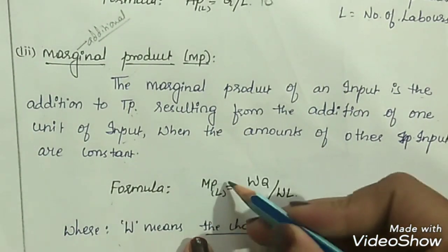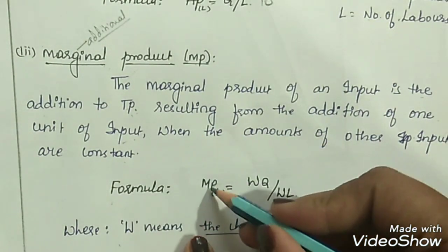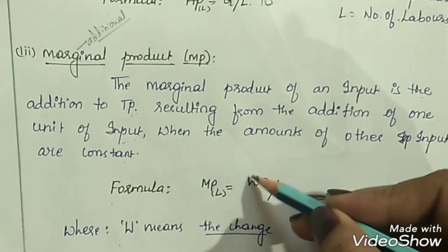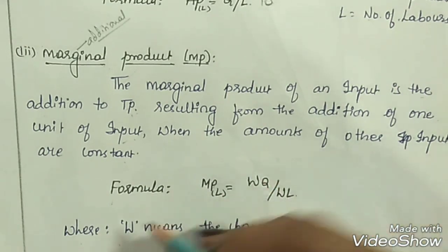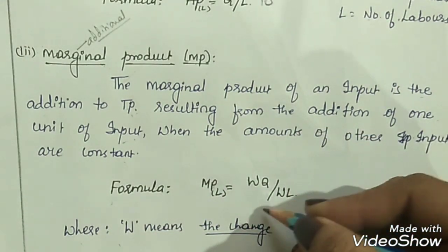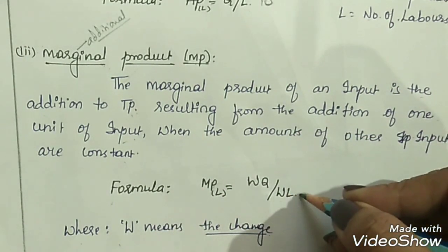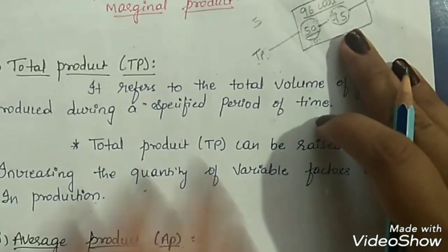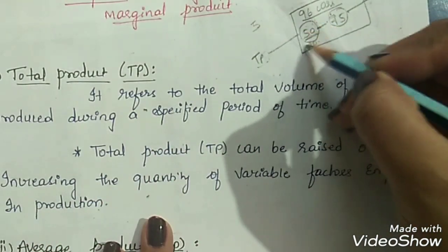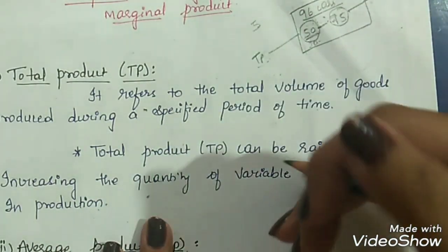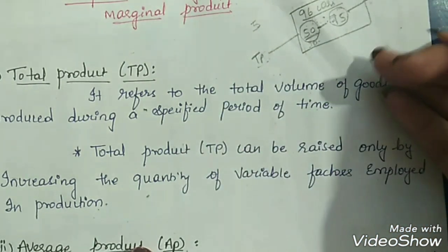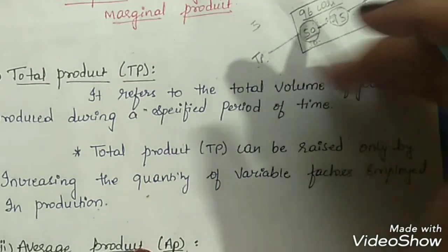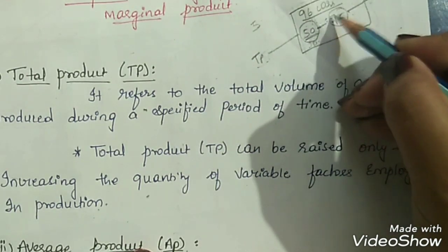The formula is MP of L (marginal product of labor) equals delta Q divided by delta L, where delta refers to change, Q refers to total product, and L refers to number of labors. Earlier we used to produce 50 cars in a day, but now we have increased production from 50 to 75 — a change of 25 units.